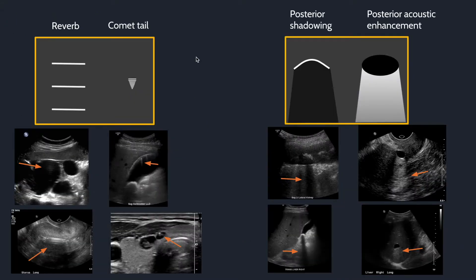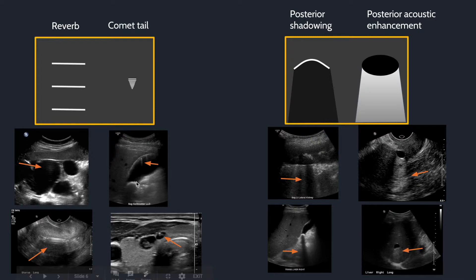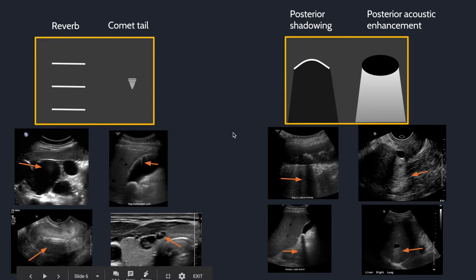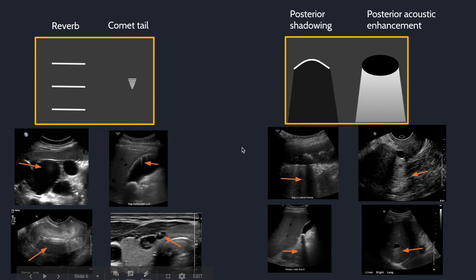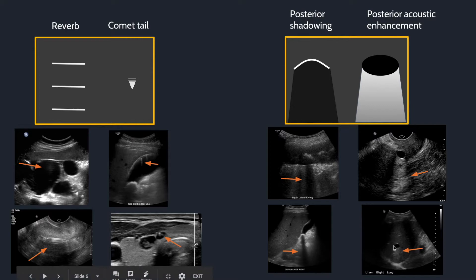Here are examples of the common artifacts. We have a reverb artifact in a cyst wall and from the IUD in the uterus. Here is comet tail artifact from adenomyomatosis in the gallbladder wall and in a colloid cyst in the thyroid. Here is posterior acoustic shadowing from a stone in the kidney and in the gallbladder. Here is posterior acoustic enhancement from a cyst in the cervix and in the liver.